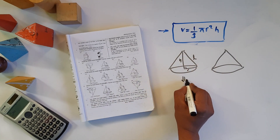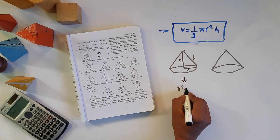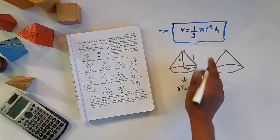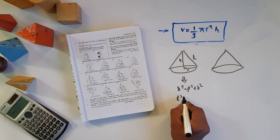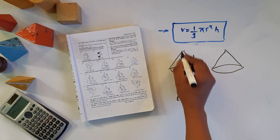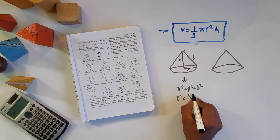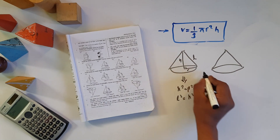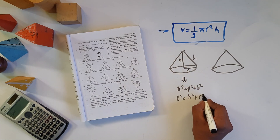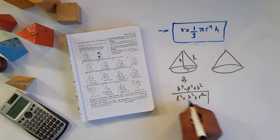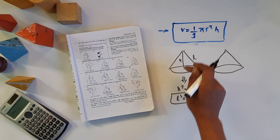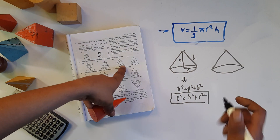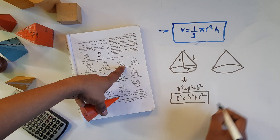This is Pythagoras theorem: H squared is equal to P squared plus B squared. The perpendicular is H, and the base is the radius. So we can find the missing element using this relationship.